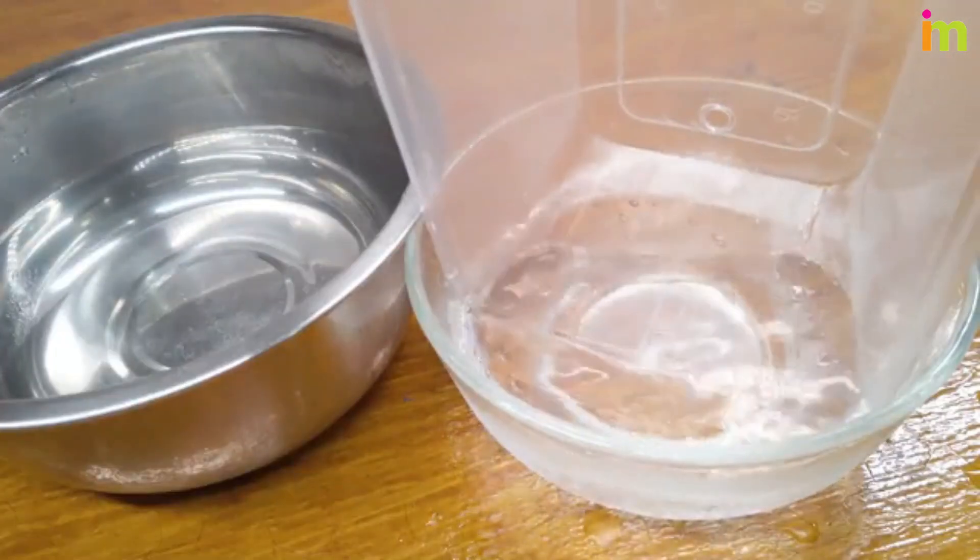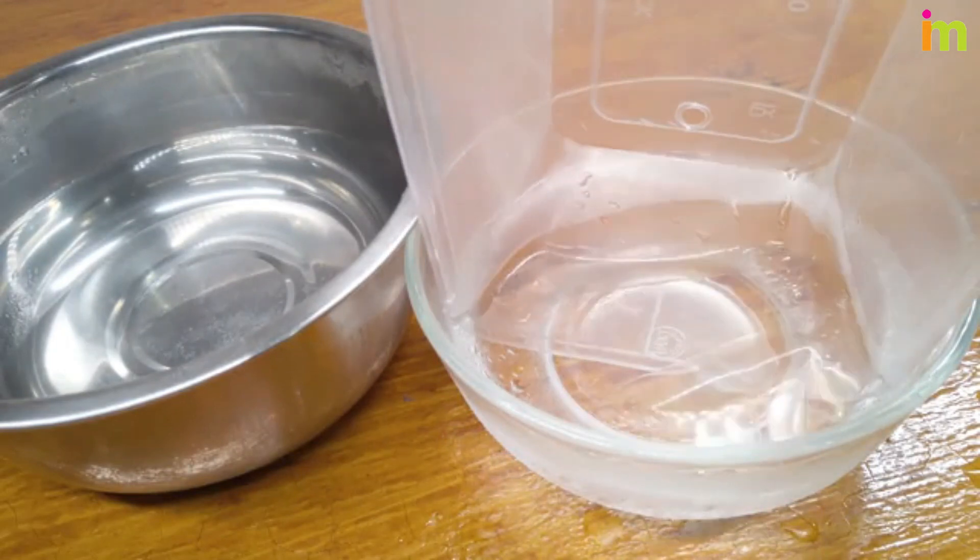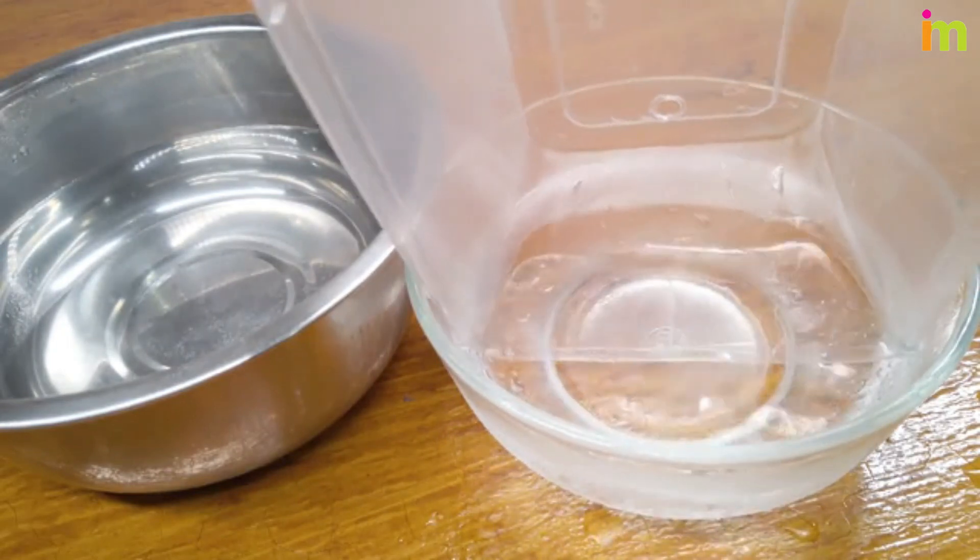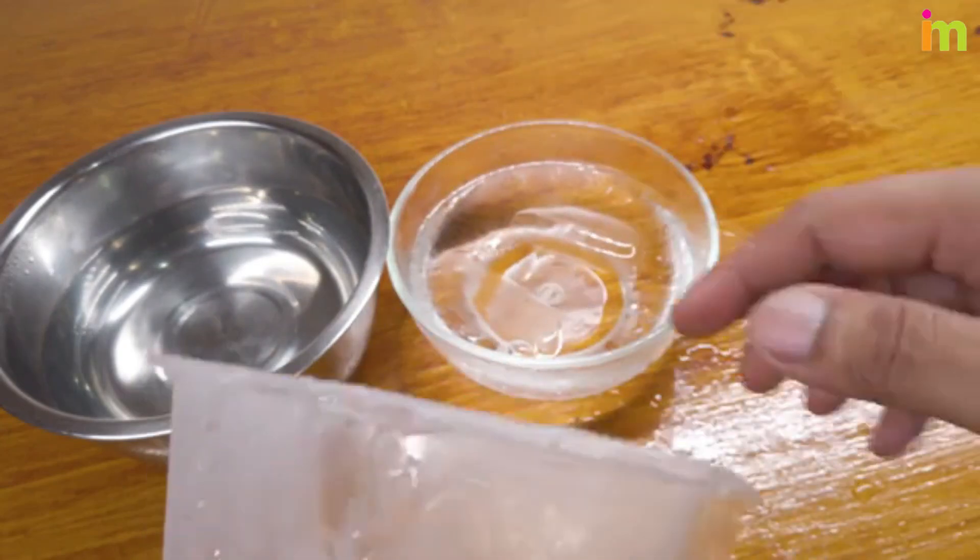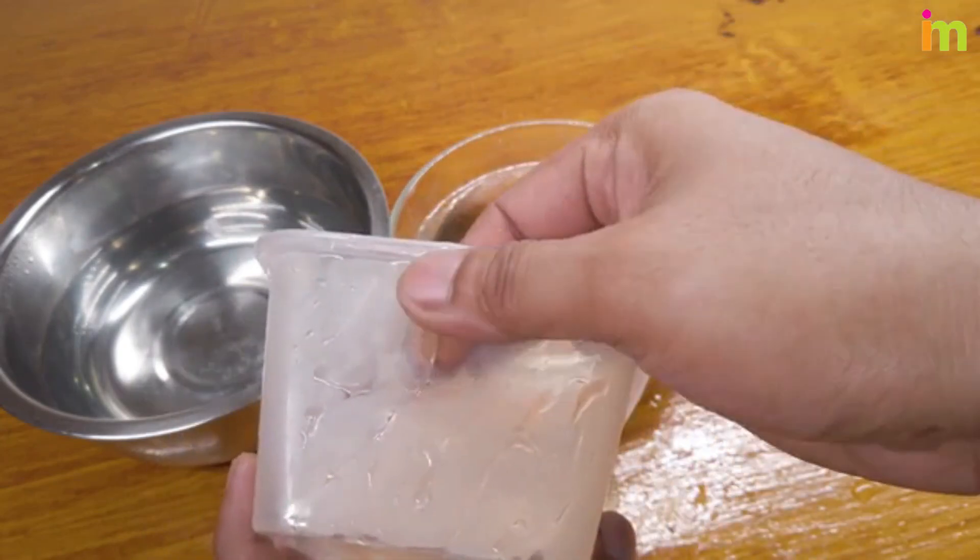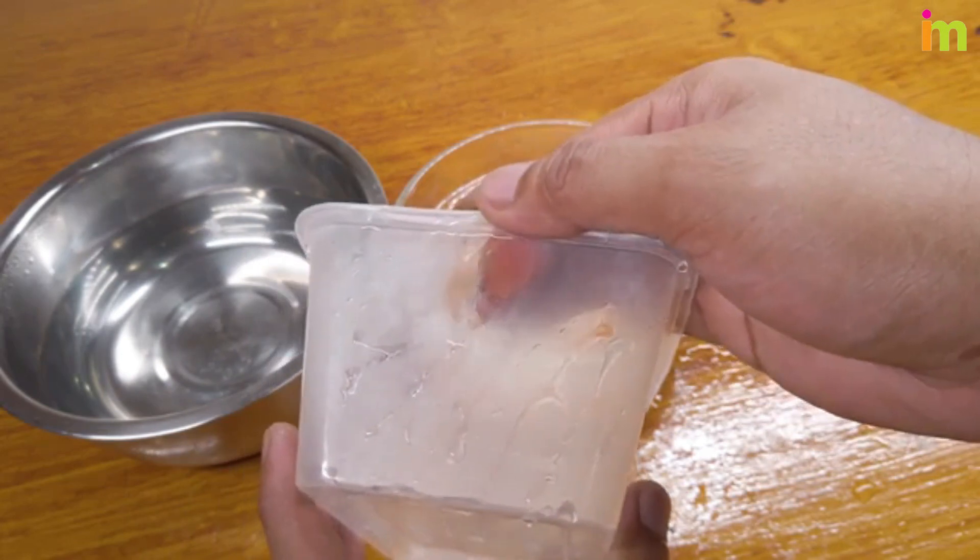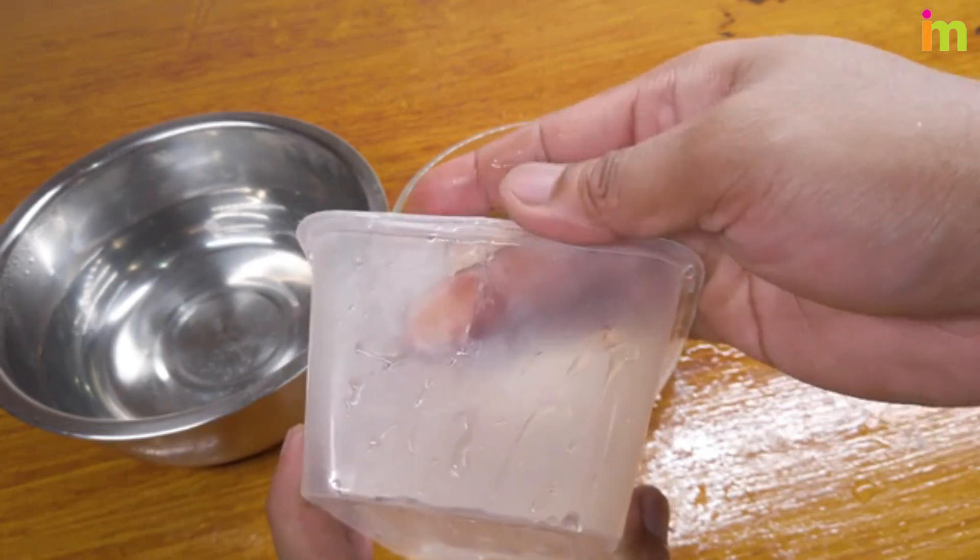Once you have reconnected the edges of the crack, it's important that you quickly cool the warm plastic so that it sets into place. Fully submerge the plastic into the container of cool water. Do not move it around in the water and allow it to sit for at least 30 seconds.